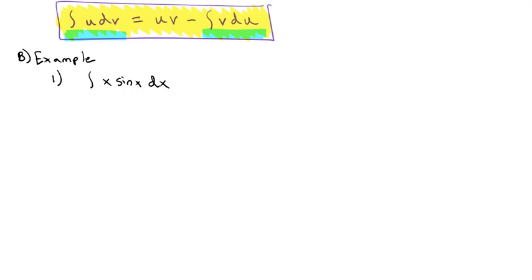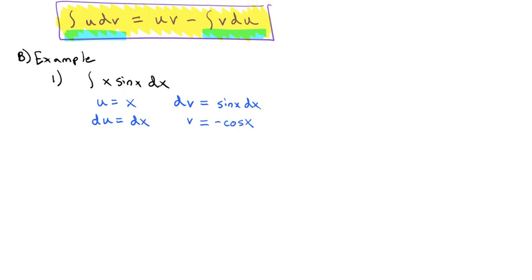In our normal situations, we wouldn't be able to find this antiderivative. But if we break it up into the piece that is u and the dv, let's let x be the u and the rest of it — sine x dx — be the dv. Then we can find the derivative of u: the derivative of x is just dx. And we're also missing v from our formula. v is the antiderivative of dv; the antiderivative of sine x is negative cosine of x. Notice that in the formula, the top row is our original integral.